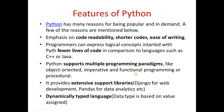The last feature is that Python is a dynamically typed language. This means data types are determined based on the value assigned at runtime. Since Python is an object-oriented language, and object-oriented languages are also known as dynamic languages, dynamic typing is a core feature of Python.